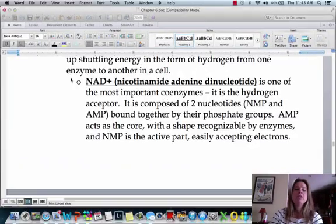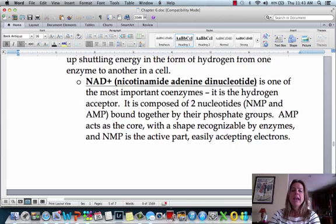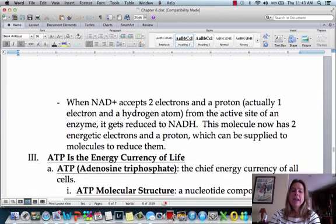Now, what it's going to do is it's going to shuttle electrons, and so it's going to do that by accepting two electrons and a proton in the form of a hydrogen. So if you look here, I say when NAD+ accepts two electrons and a proton, that's actually one electron and a hydrogen atom from the active site of an enzyme. It gets reduced to NADH. That's really wordy and scary looking.